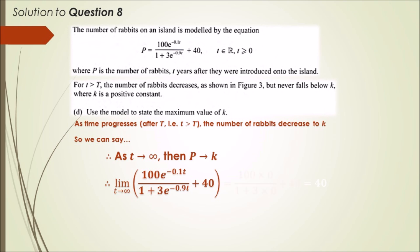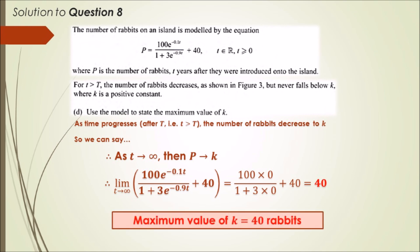If you plug in five nines, you'll know that e^(-t) approaches zero. So it's like 100 times 0 over 1 plus 3 times 0. 100 times 0 alone is 0, so you don't even need to worry about the bottom. Hence, 0 plus 40 will give you 40. So in the long run, the population should decrease to 40 rabbits. Voila, that's it, guys.